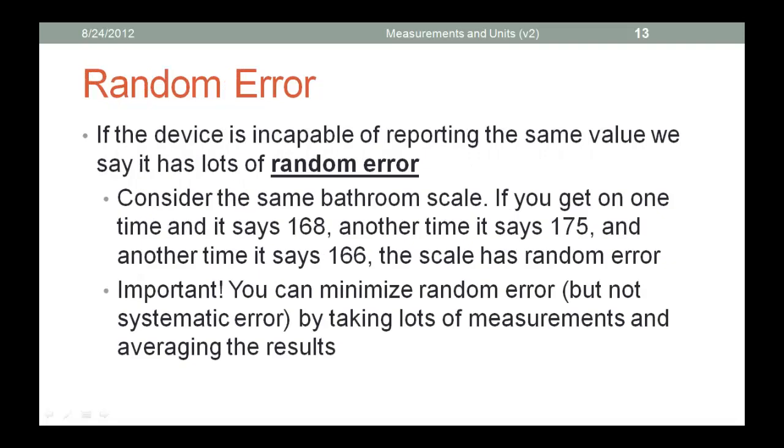Random error is different. If the device is incapable of reporting the same value, we say it has lots of random errors. Random errors are unpredictable. They are chance variations in the measurements over which you, as an experimenter, have little or no control. There is just as great a chance that the measurement is too big as that it is too small. Since the errors are equally likely to be high as low, averaging a sufficiently large number of results will, in principle, reduce the error.